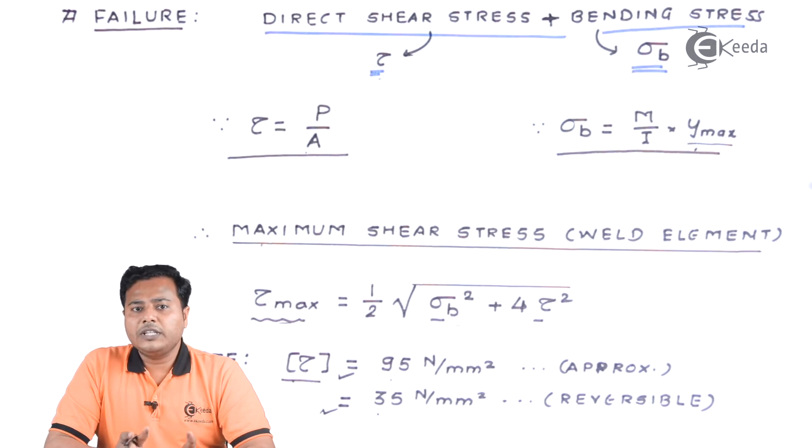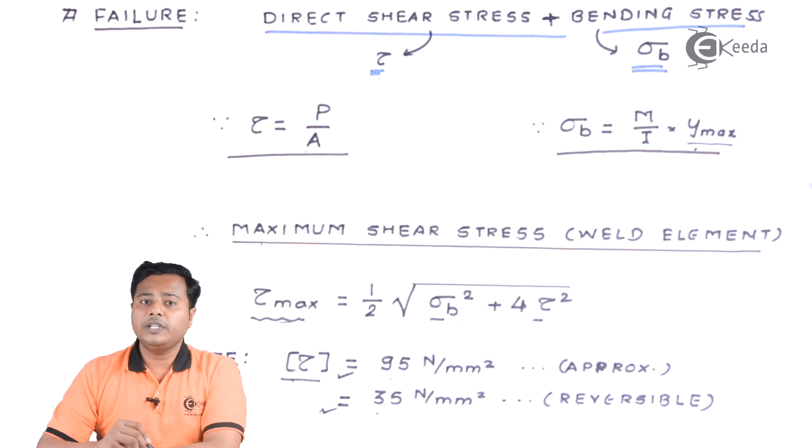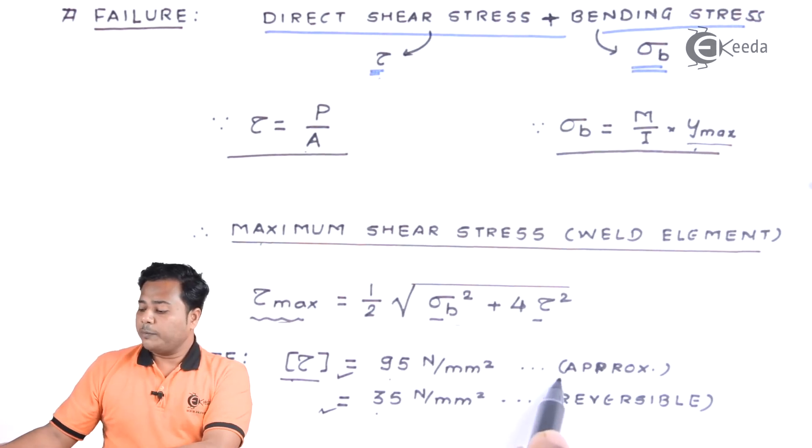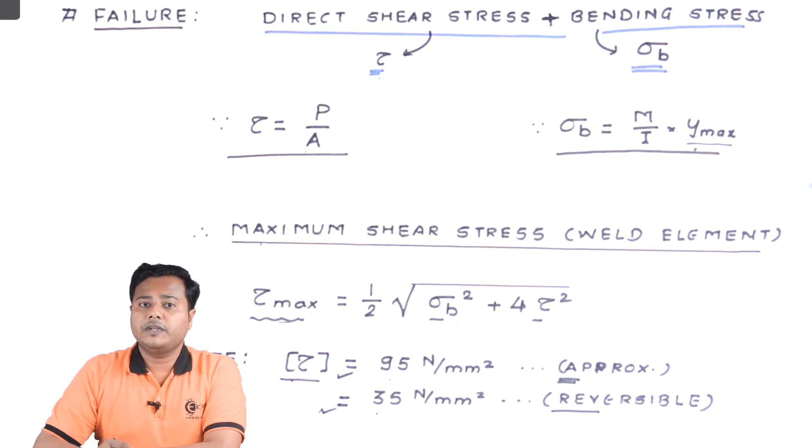Since that is not the part of our consideration as far as the syllabus is concerned, we are going to learn these values directly and we are going to use them. The only thing that you need to remember is for approximate value in general value will be 95, somewhere around 95. And if the load is reversible it should be 35 Newton per millimeter square.